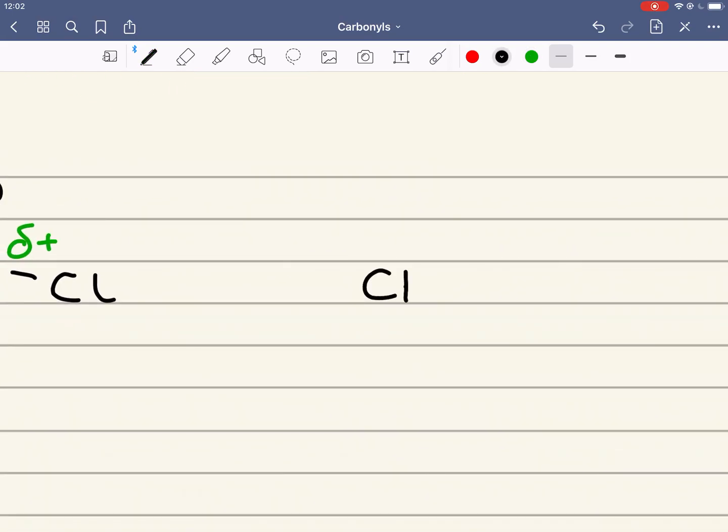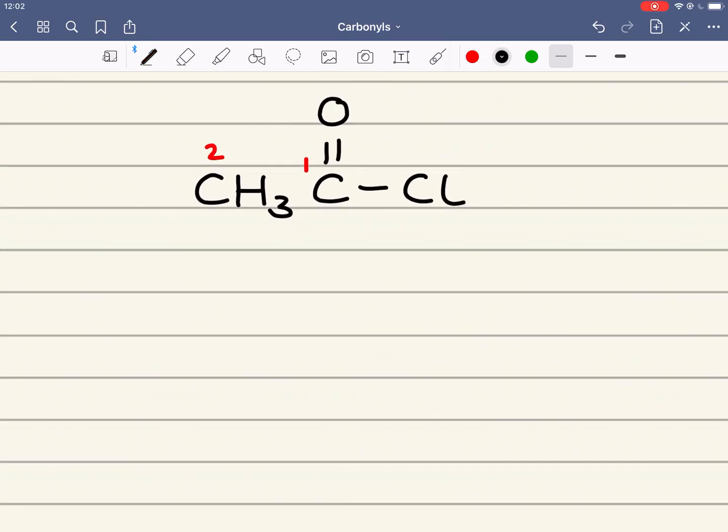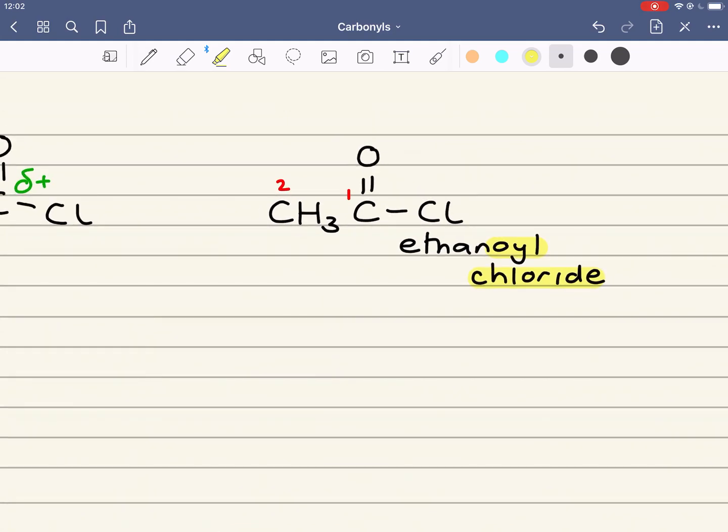An example of an acyl chloride would be ethanoyl chloride. So it's ethanoyl because I've got two carbons in my longest chain. Acyl chloride is my suffix for these acyl chlorides.